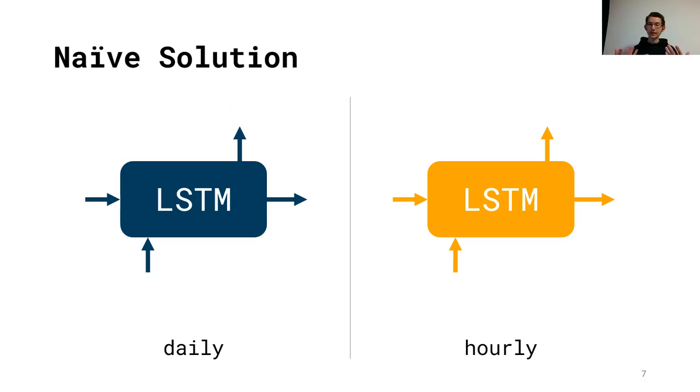I would have two distinct setups of LSTMs and nothing in this framework would tell these two models to generate consistent predictions. We'd end up with two sets of predictions that are most likely not consistent to each other. If I look at every 24 hourly predictions, they probably won't average or sum to that one corresponding daily prediction. Although, of course, in reality, there is only one ground truth. So intuitively, there should be, these two predictions should be consistent to each other. But in this setup, they most likely won't be because the setups are just distinct.